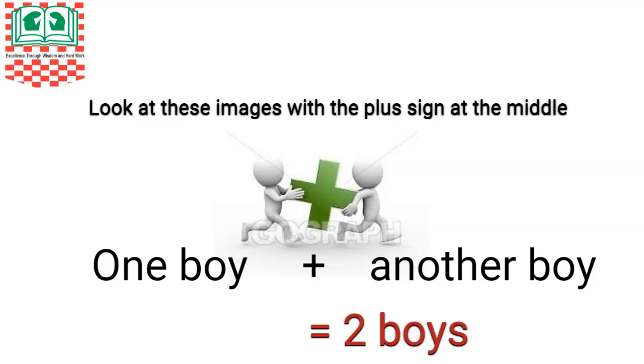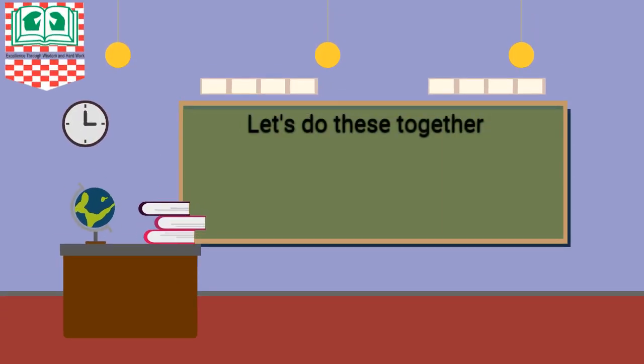Now let's do this together. Add 43 and 21. Arrange under the tens and units: 43 plus 21.